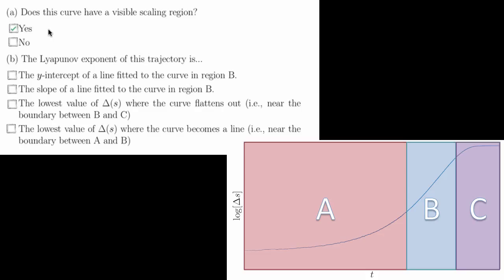Part B asks: the Lyapunov exponent of the trajectory is the slope of a line fitted to the curve in region B. That is, the slope of a line fitted to the scaling region of this plot.